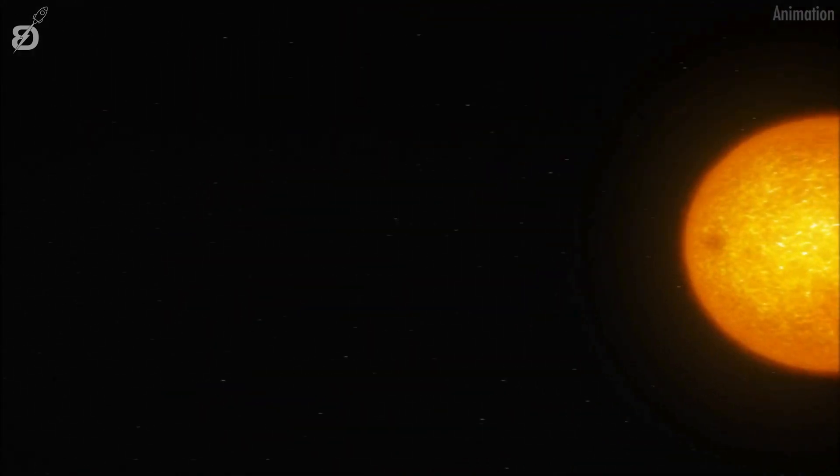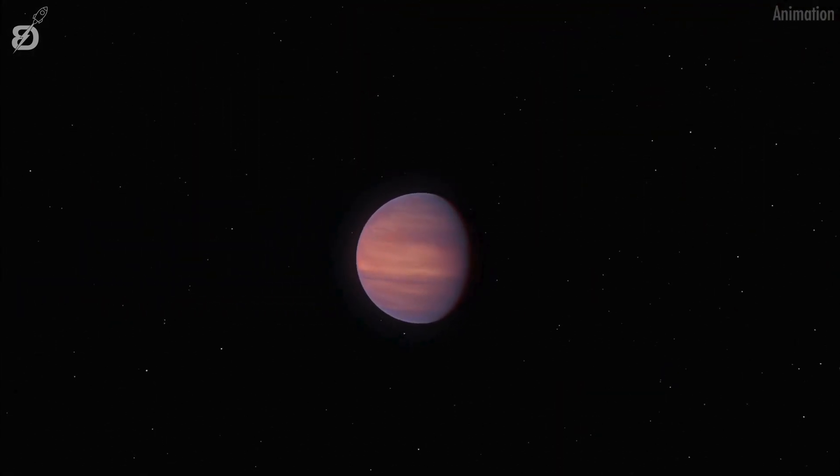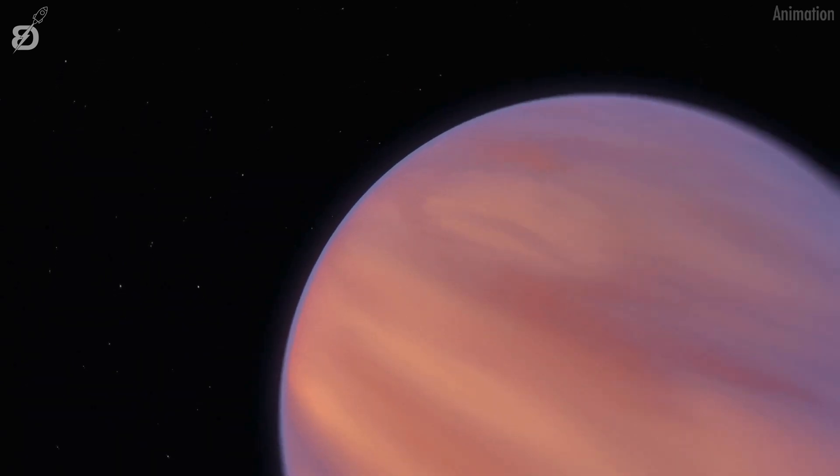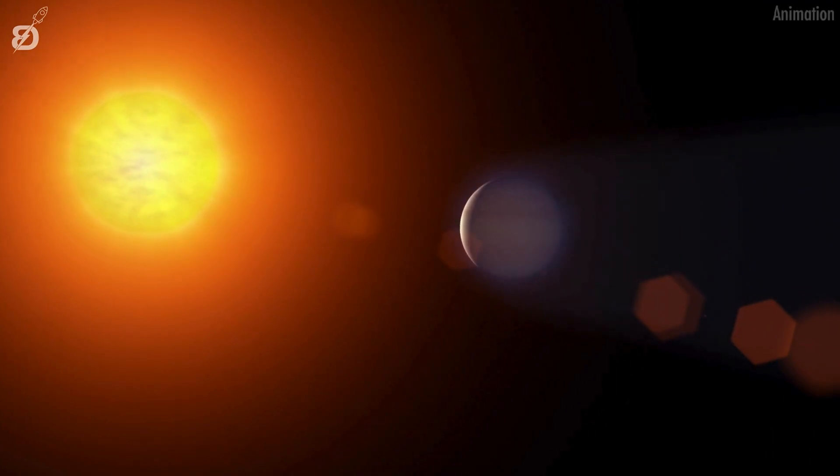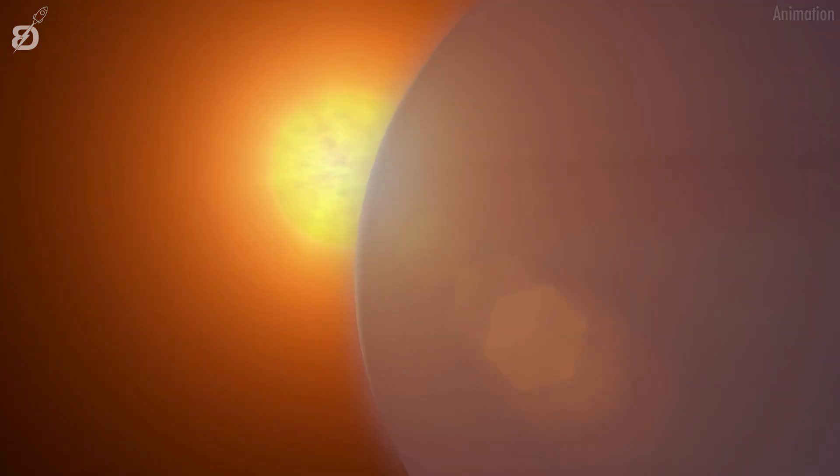Observations of that infrared light with the Spitzer Space Telescope indicated that the day side of the planet experienced exceptionally scorching temperatures of well over 4,400 Fahrenheit, while the night side had cooler but still hellish temperatures of around 2,060 Fahrenheit.